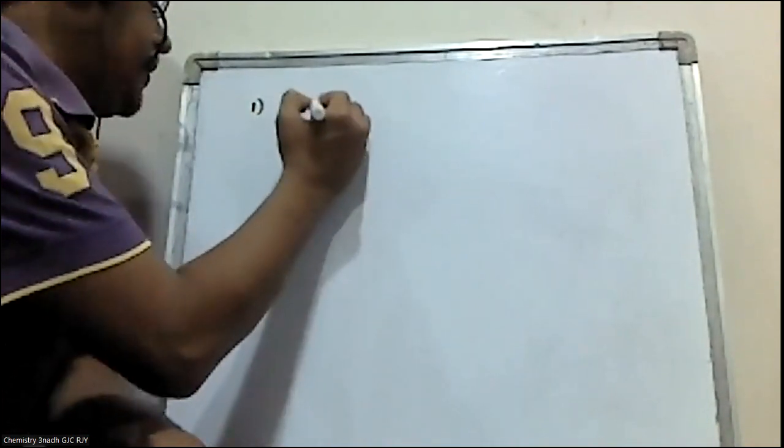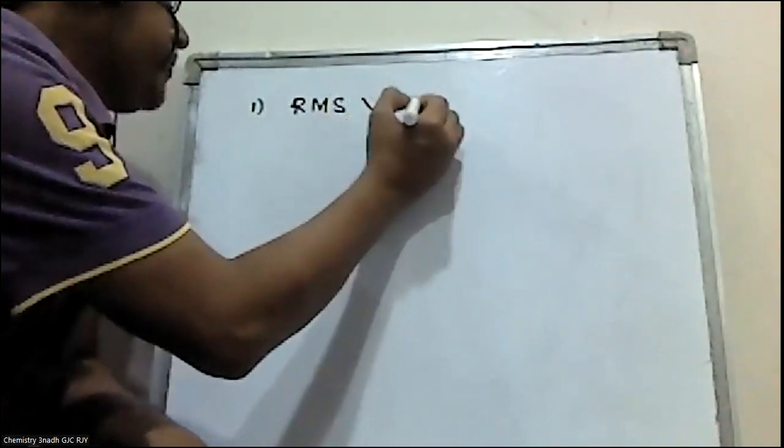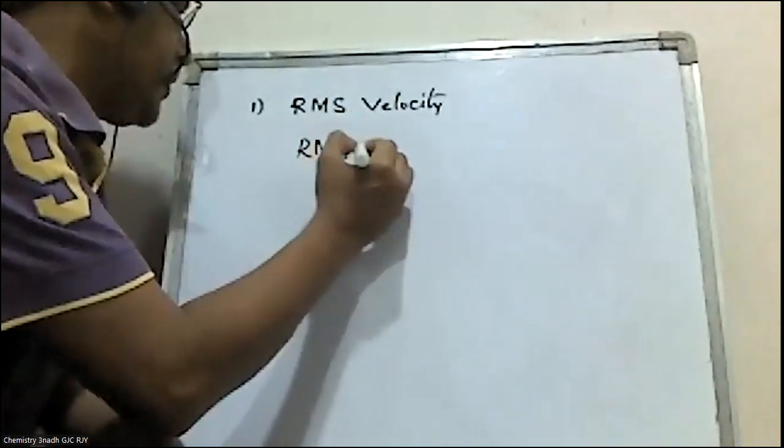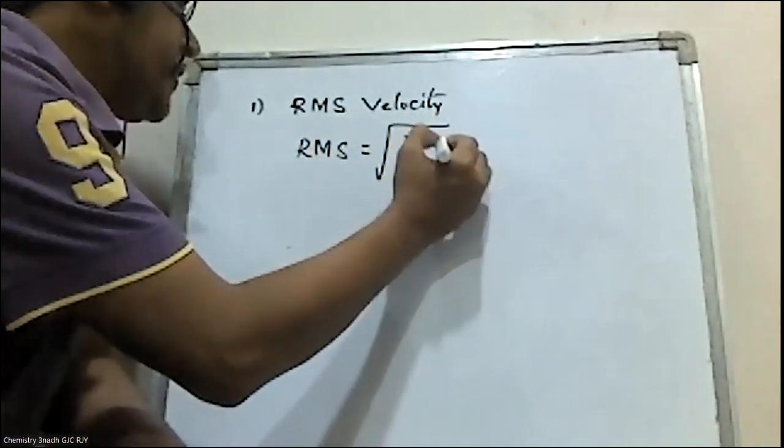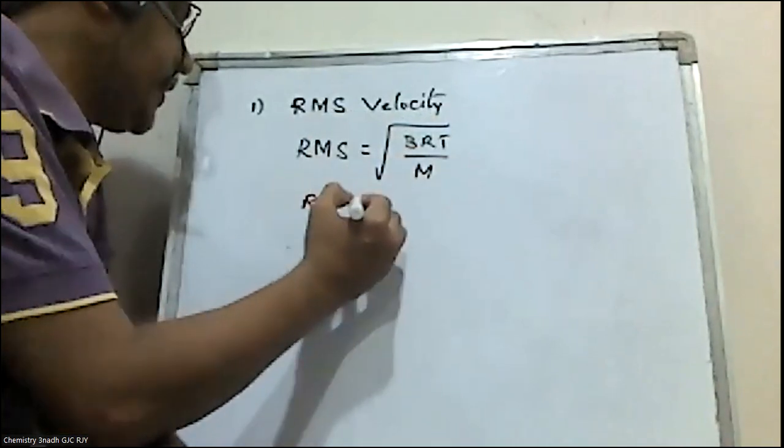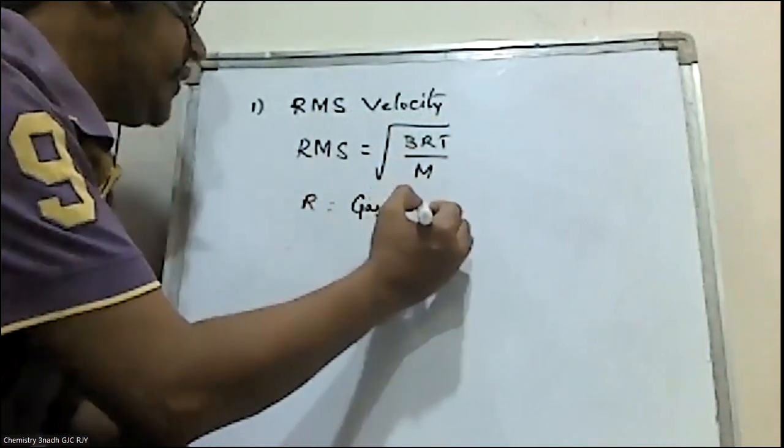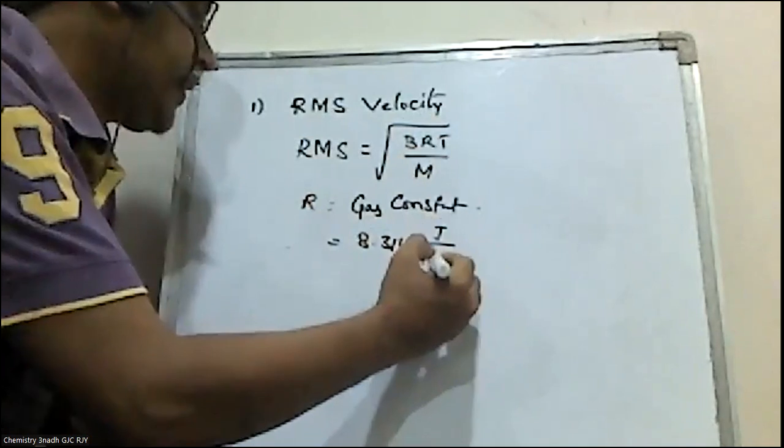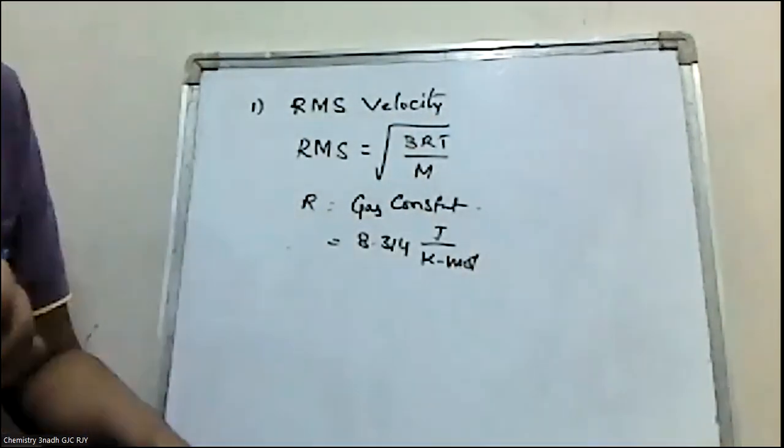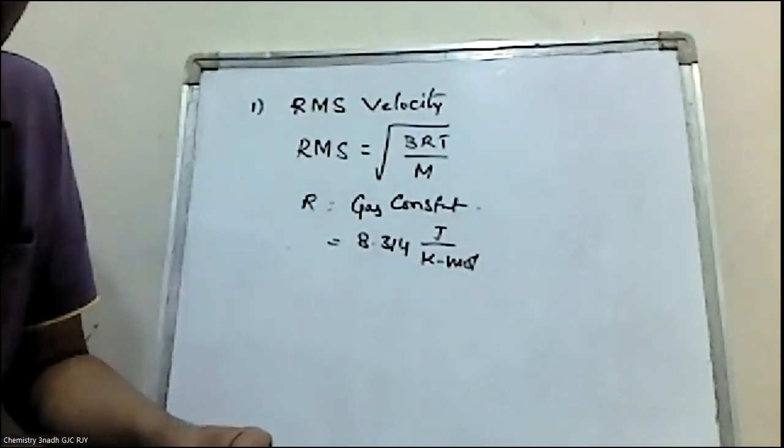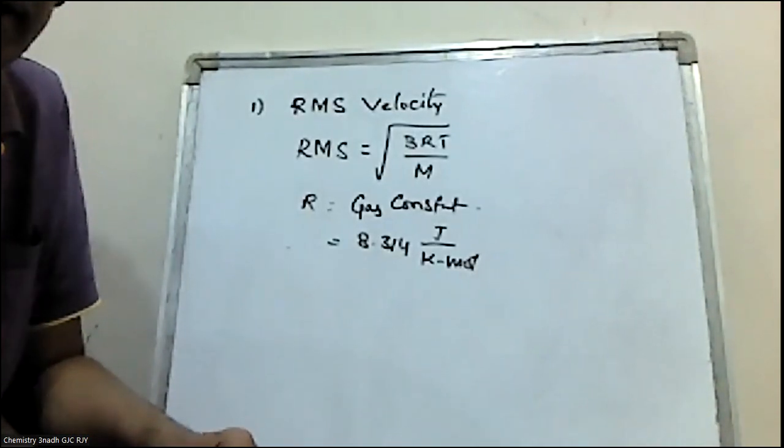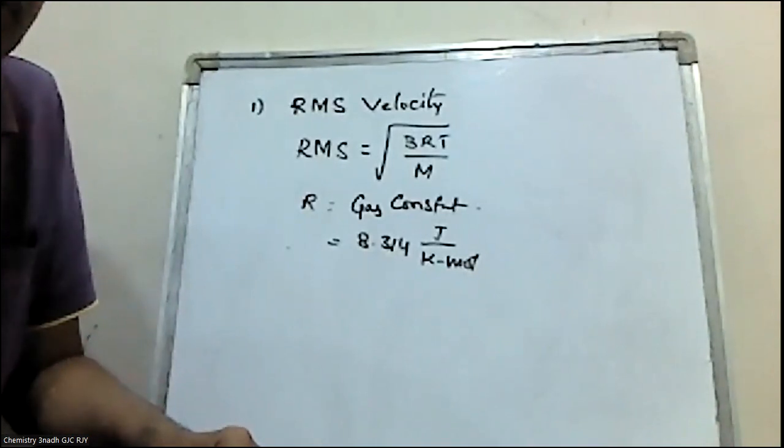The first problem is RMS velocity. The RMS formula is square root of 3RT by M, where R is the gas constant, T is temperature, and M is molar mass. R is called the universal gas constant because the value is the same for all gases.